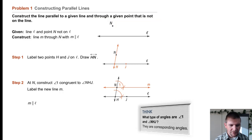Step 1: label two points H and J on line L. Of course the naming is up to you, but for this example H and J are chosen. And then draw line HJ.